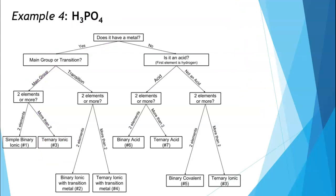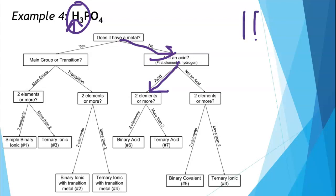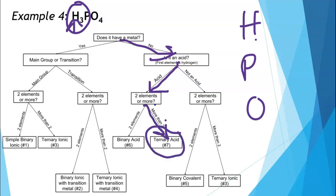Final example: H3PO4. Does it have a metal? Hydrogen is not a metal — it's a non-metal. Phosphorus is a non-metal. Oxygen is a non-metal. So there are no metals. Is it an acid? Is the first element hydrogen? Yes — so this is an acid. Are there two types of elements or more? We have hydrogen, phosphorus, and oxygen — three different types. So this is a ternary acid.